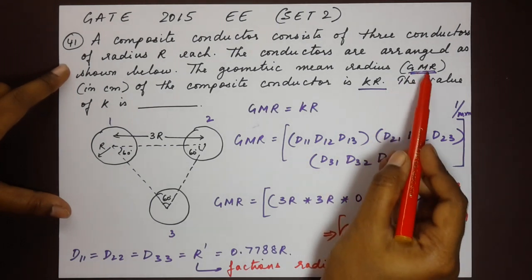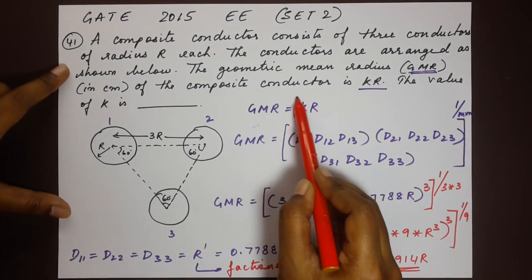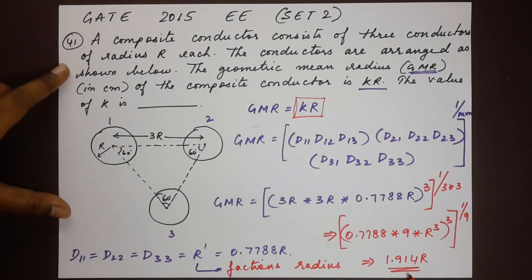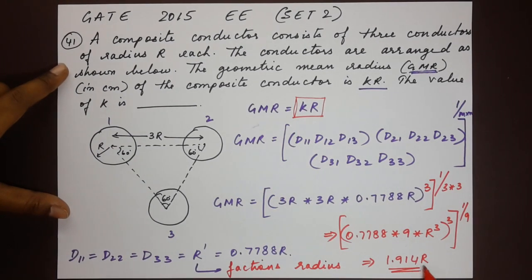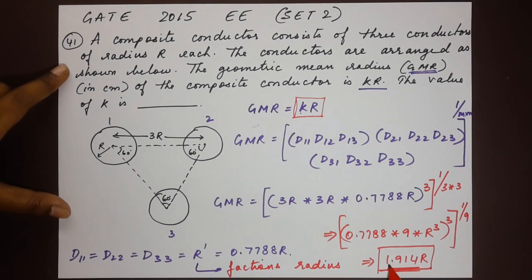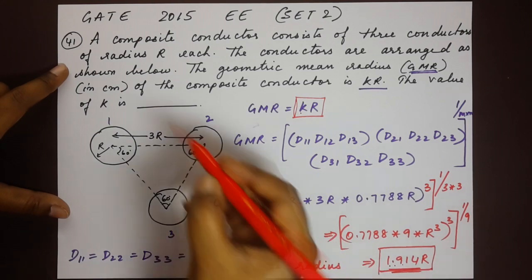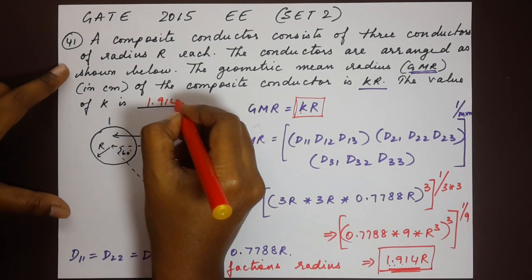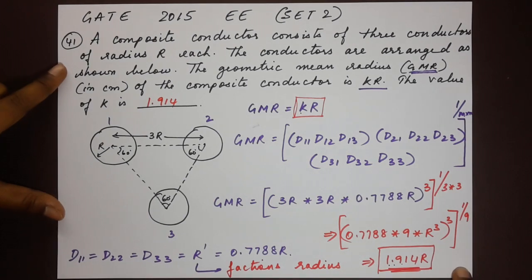Now the question says that GMR is kr. Here we have found it to be 1.914r. Comparing the two values, you will see that k is 1.914r. So this is the final answer.